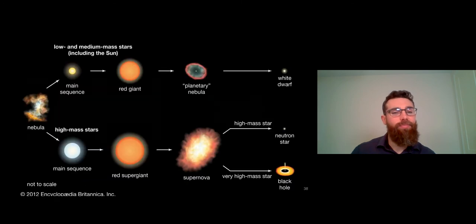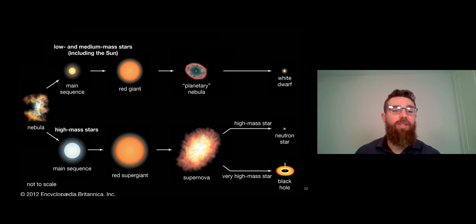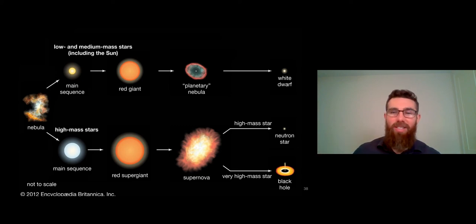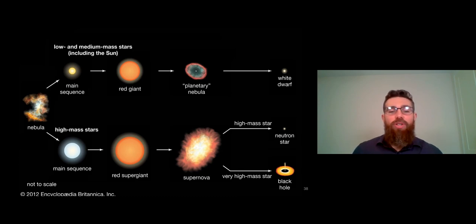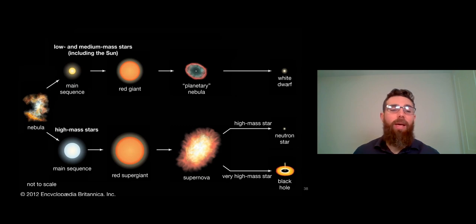For a general overview of stellar evolution, it's purely down to mass - their starting mass. Low-mass stars go: nebula, main sequence, red giant, planetary nebula, white dwarf - that's what our sun will do. The larger ones follow a similar path but end with a supernova and then either a neutron star or a black hole, depending on their mass.